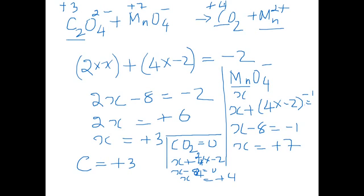And manganese has an oxidation number of plus 2 in the product side. So carbon changes its oxidation from plus 3 to plus 4, so that's the oxidation half reaction. Manganese changes from plus 7 to plus 2, therefore that's the reduction half reaction.